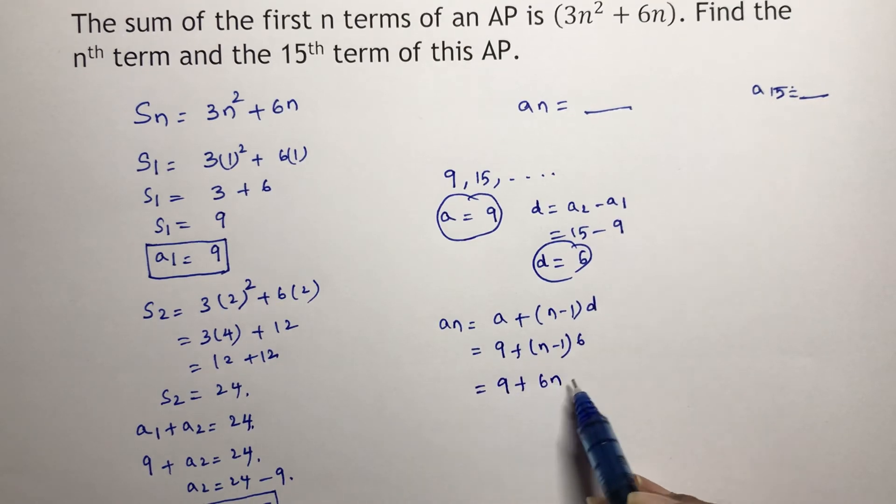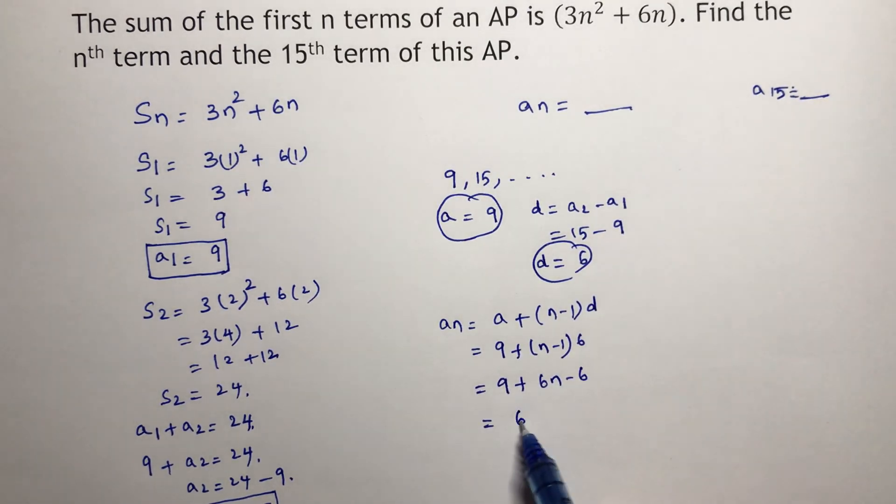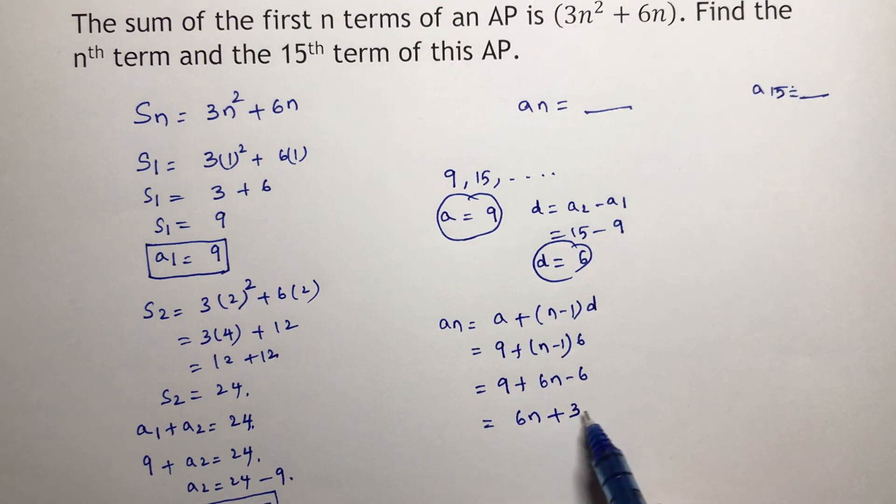9 plus 6n minus 6. So 6n, 9 minus 6 is 3. So 6n plus 3.